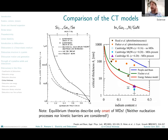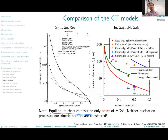One last comment to this slide: please take into account that the models here are so-called equilibrium models — equilibrium theories. So they describe what would happen if we allow infinite time for the material to generate the dislocations and come to equilibrium. In other words, it can well happen that you do not observe any dislocations even above the critical thickness because the system didn't have enough time, or enough thermal energy, to generate the dislocations.